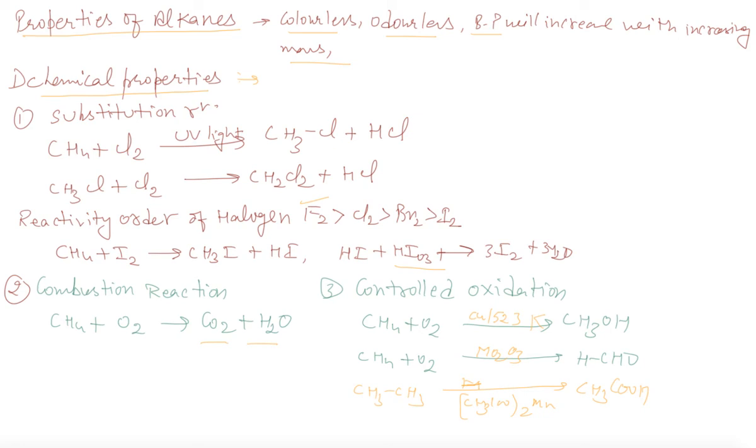So these are the chemical reactions of alkane. And one more is aromatization reaction. In aromatization reaction, if we will take the alkane of 6 carbon atoms, and we are heating it with chromium oxide Cr2O3 or vanadium oxide, we will get benzene. This reaction is called aromatization reaction. This reaction is also known as reforming reaction. So this is the whole about the physical and chemical properties of alkane.